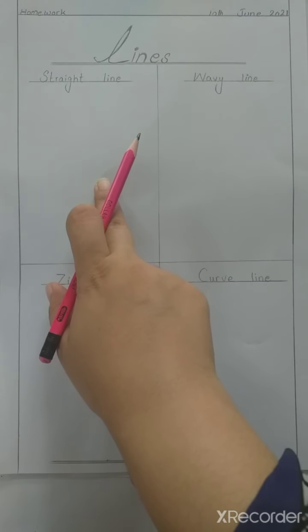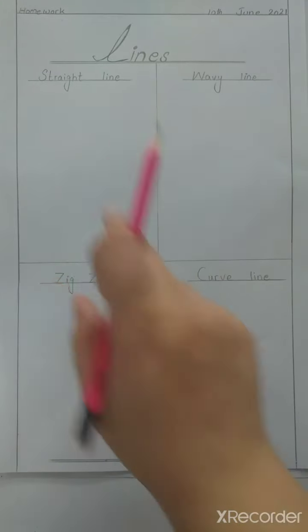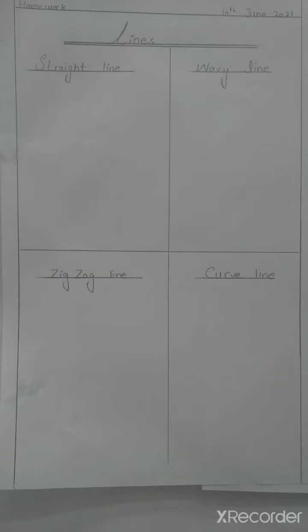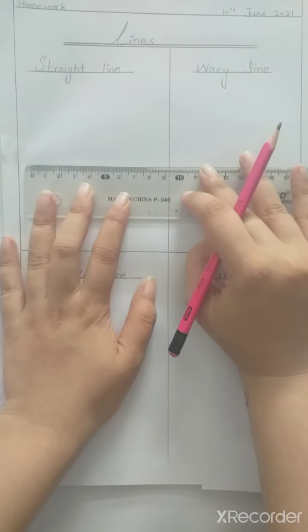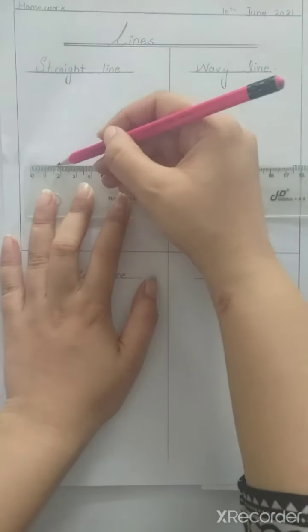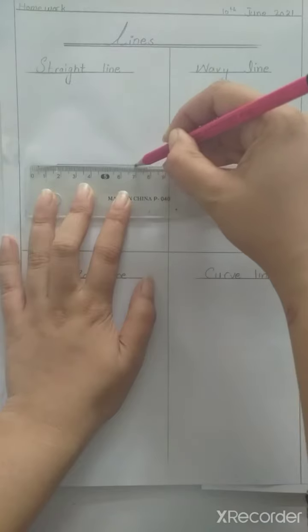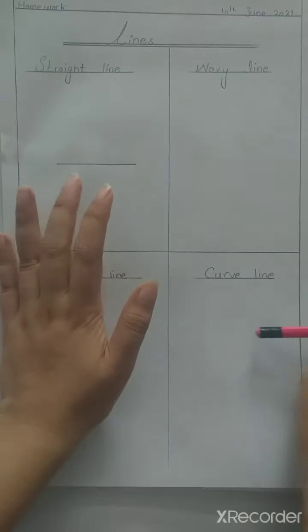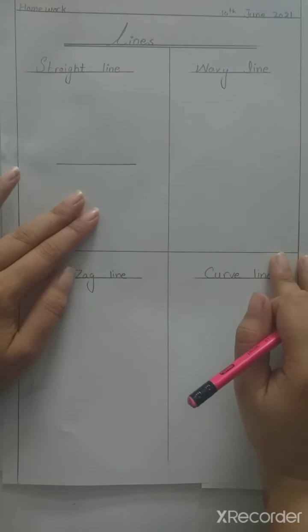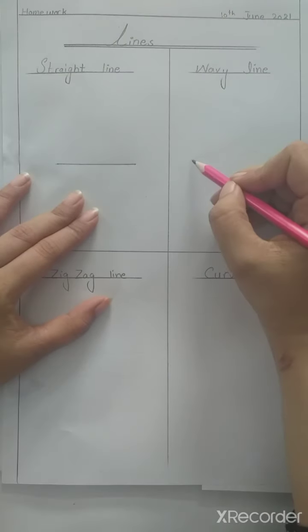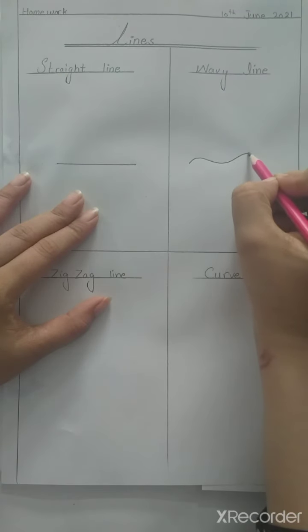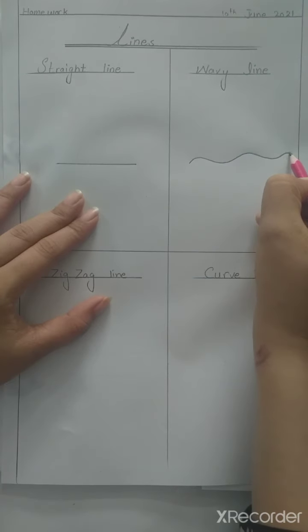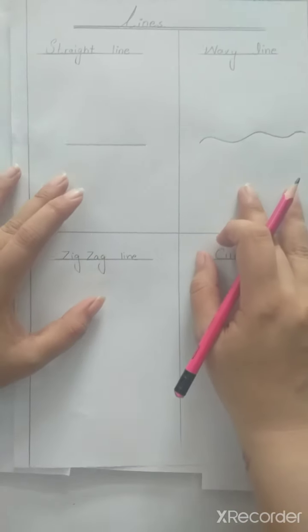Now first we will draw a straight line. Students, we will learn to draw a straight line. You have carefully drawn the wavy line.